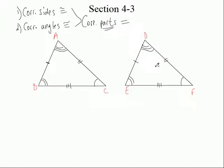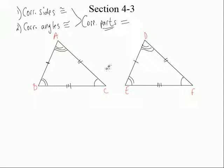If everything is exactly the same on both of these triangles — the corresponding angles are congruent, the corresponding sides are congruent — what do you think we can say about the triangles? We say that they're congruent to each other. Never say triangles are equal to each other. You always say triangles are congruent to each other. Some teachers are very picky that you always say congruent for the sides and the angles too, but when you talk about the triangles, you're definitely using the word congruency.